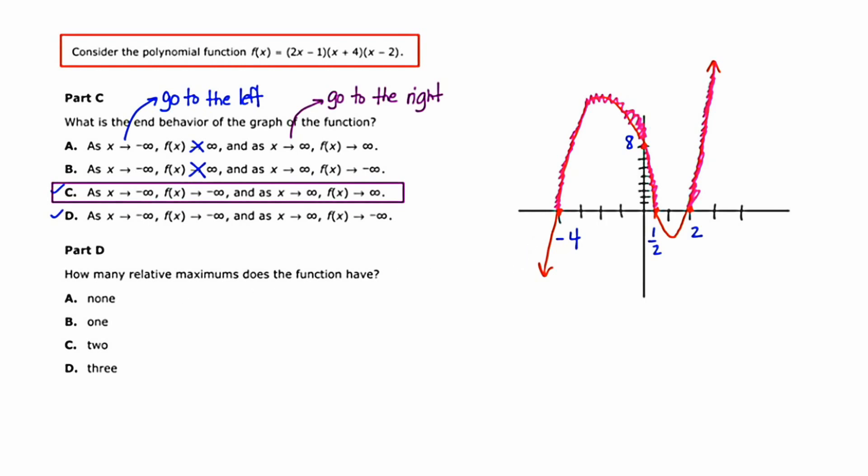Now let's finish the question by going to Part D. How many relative maximums does the function have? Relative maximum, in the most simplistic way to think about it, means the top of a hill. So for how many points on our graph do we look like we have the top of a hill? And I'm going to say there's one. There's one top of a hill right about here.